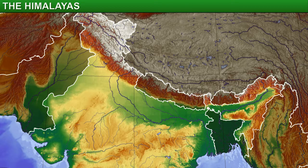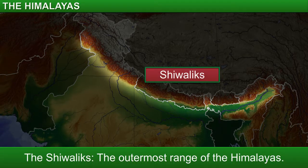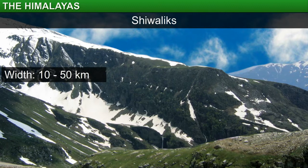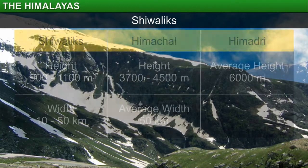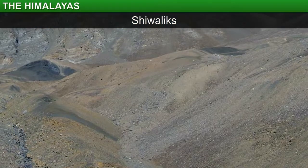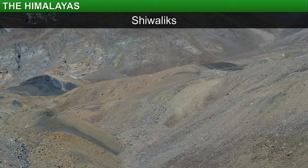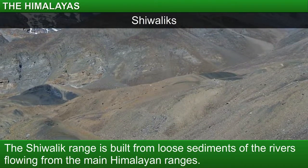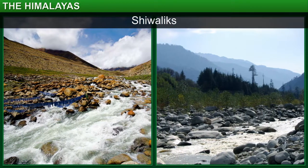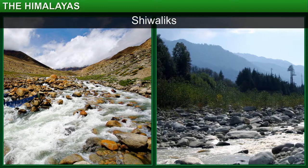The range south of the Himachal, that is the outermost range of the Himalayas, is the Shivalik range. The Shivaliks are 10 to 50 kilometers wide and the heights of these mountains range from 900 to 1,100 meters. Thus, the Shivaliks form the lowest range of the Himalayas. This is because this range is built from loose sediments brought down by the rivers flowing from the main Himalayan ranges located up north. The sediment consists of broken stones and soil. Therefore, the valleys of the Shivalik region are covered with thick gravel and alluvium.